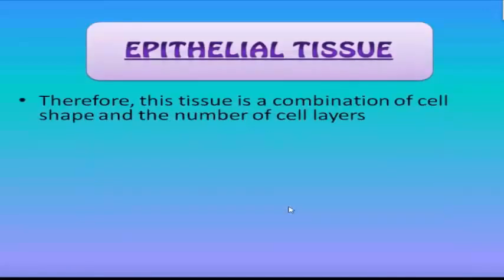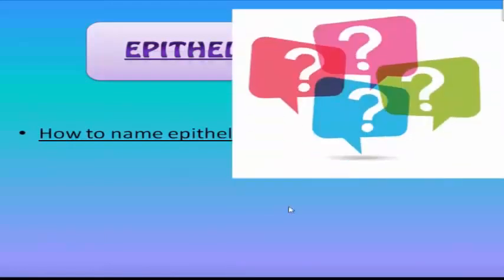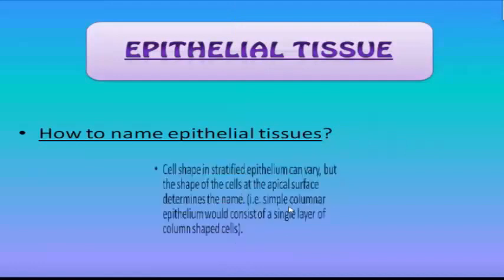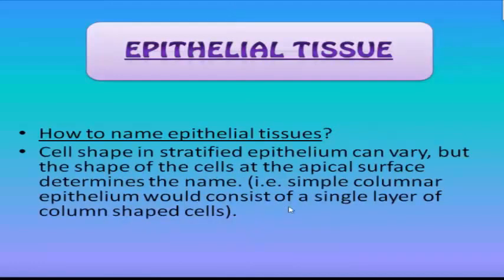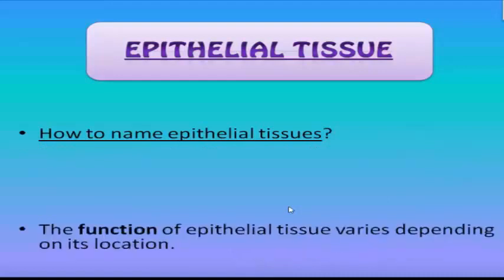So, epithelial tissue is a tissue which is a combination of cell shape and the number of cell layers. We can name epithelial tissue based on the shape of the cells at the apical surface. For example, we have simple columnar epithelium, which consists of a single layer of column-shaped cells. The function of epithelial tissue varies depending on its location.